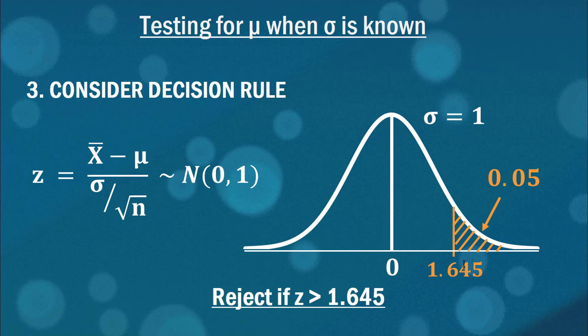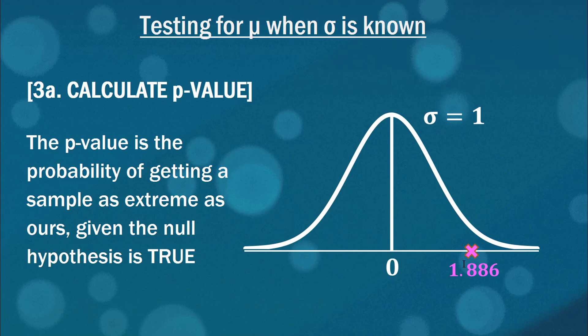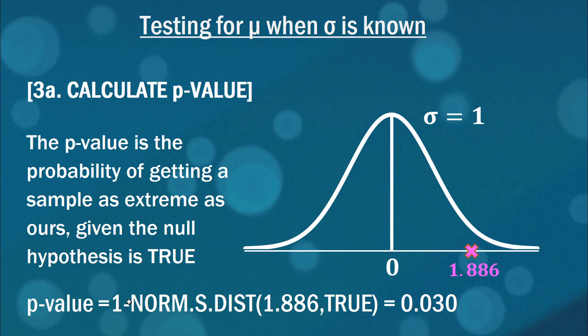Now you're very welcome to then go on to steps 4 and 5, but I thought I might put a little step 3a in here, just to discuss the concept of p-values, because there's two kinds of ways of coming at this. Now a p-value is the probability of getting a sample as extreme as ours, given the null hypothesis is true. So in our case, you can see we've got a value, a Z value of 1.886. So really the question is, what's the probability of getting a test statistic equal to or greater than that?